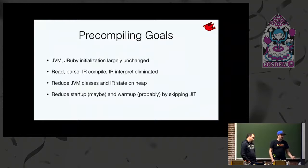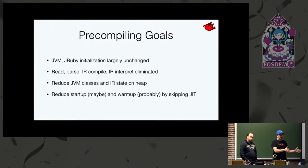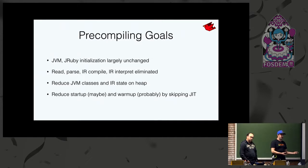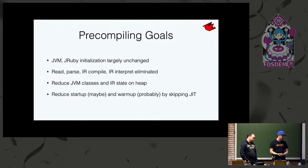Goals for AOT: JRuby and JVM initialization are about the same — we can't do much to reduce that — but hopefully we can eliminate reading files, parsing, compiling the IR, optimizing the IR, and interpreting it. We'd launch straight into bytecode execution, reduce the number of JVM classes, and probably reduce heap usage since we don't need to stand up all the IR. We'd get to bytecode eventually anyway, so the IR is extra wasted space.